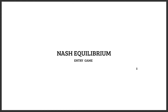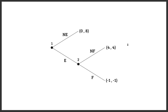Today we are going to work on the Nash equilibrium, and in particular with the entry game. We have our entry game in the extensive form. First of all, let's consider that we are in a market where there is only one firm — firm two — inside the market. Now firm one has to decide whether to enter the market or not to enter the market.